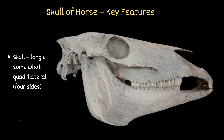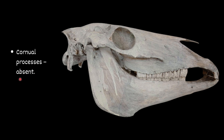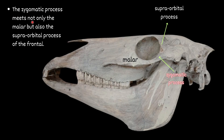Today's video is about species difference in skull. Starting with the horse skull and its key features: the skull of the horse is long and somewhat quadrilateral, or four-sided. You can find a very extensive foramen lacera. The frontal process is absent. The zygomatic process meets not only the malar, but also the supraorbital process of the frontal.